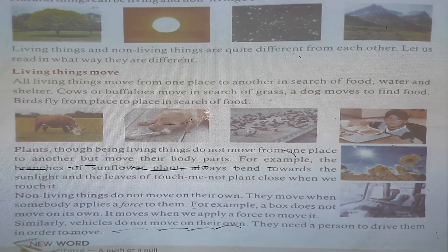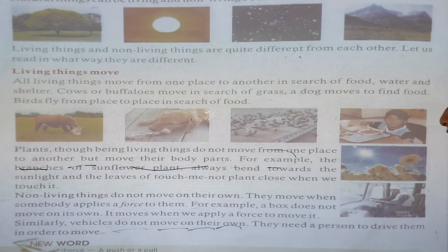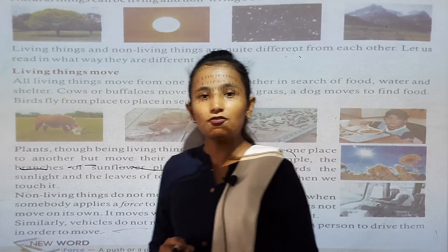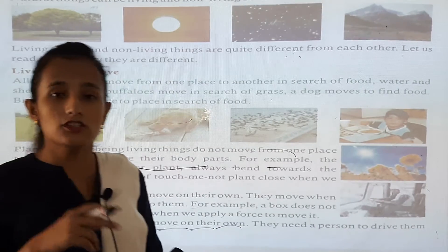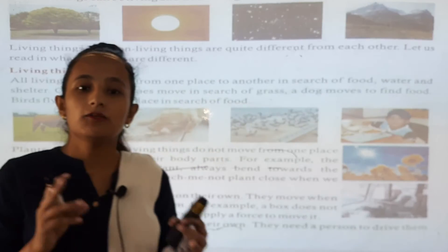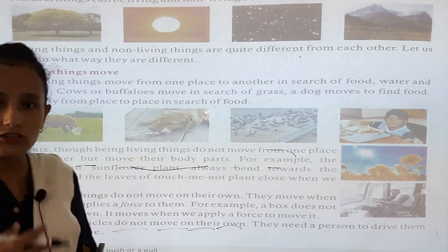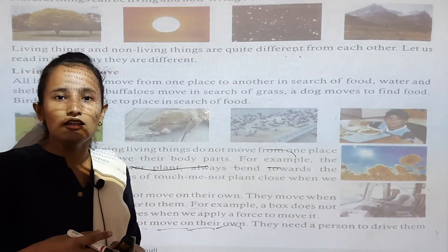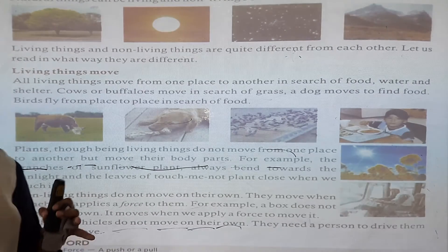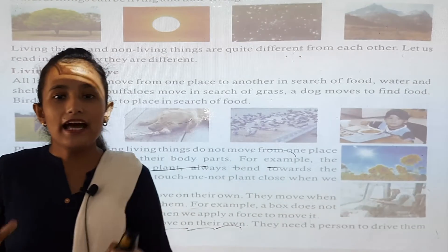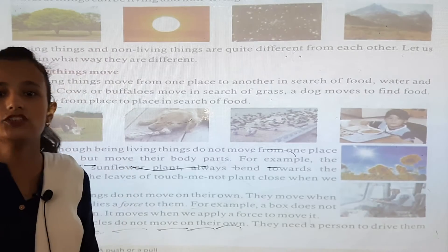Plants, though being living things, do not move from one place to another. Animals can move and search for their food. But plants are also a living thing; they cannot move. They take oxygen and carbon dioxide with the help of air, water, and sunlight. Plants take water, sunlight, and air with the help of nature.